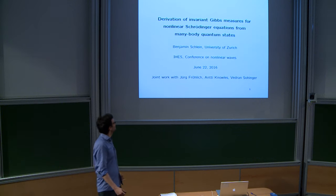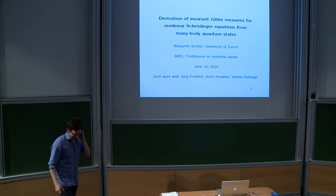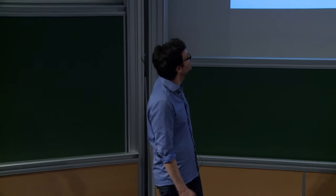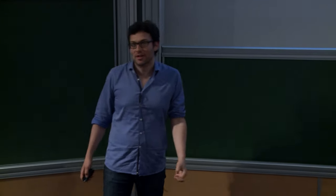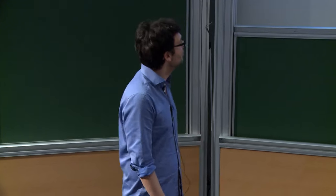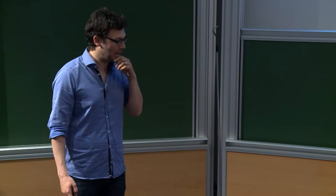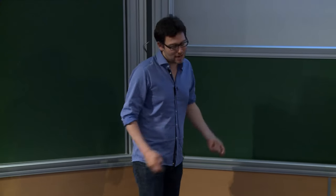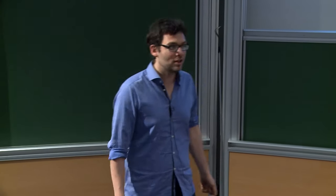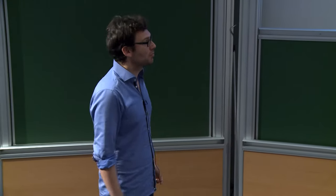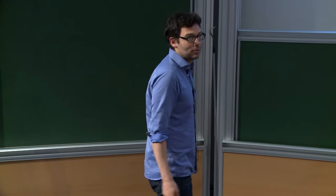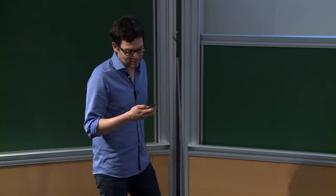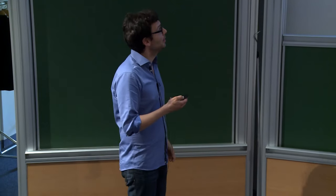Thank you for the invitation. I would like to say something about the derivation of the invariant Gibbs measure for some nonlinear Schrödinger equations, in particular for Hartree-type equations starting from many-body quantum mechanics. I'm going to start by saying something about Hartree theory, then about many-body quantum mechanics, and then explain the relationship between these two theories, in particular presenting the theorem that we can prove.